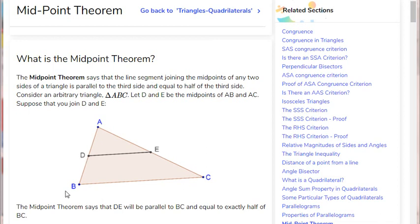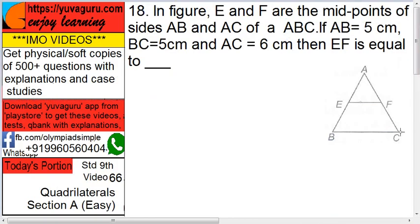Now DE is half of BC. Similarly in our case, EF will be half of BC. Now what is BC? 5. So EF will be 2.5.